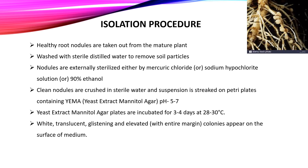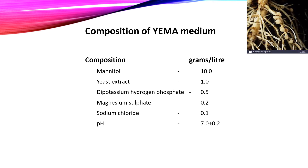The clean nodules are crushed in sterile water and the suspension is streaked onto Petri plates containing YEMA (yeast extract mannitol agar) at a pH of 5 to 7. The YEMA plates are incubated for 3 to 4 days at 28 to 30°C. After incubation, white, translucent, glistening, and elevated colonies appear on the YEMA medium. The composition of YEMA medium includes mannitol, yeast extract, dipotassium hydrogen phosphate, magnesium sulfate, sodium chloride, and pH around 7.